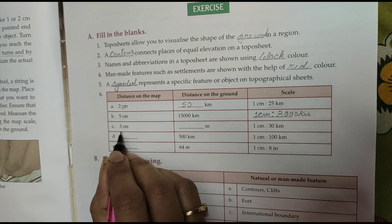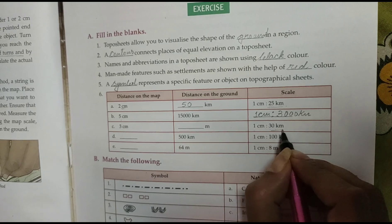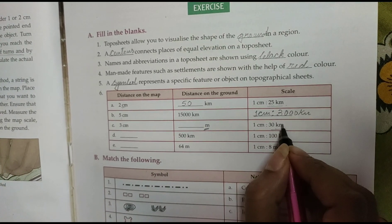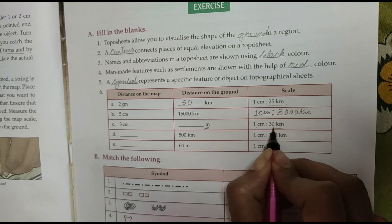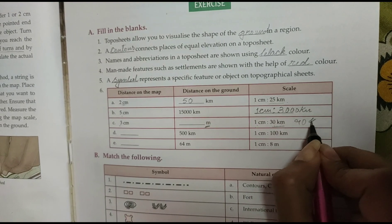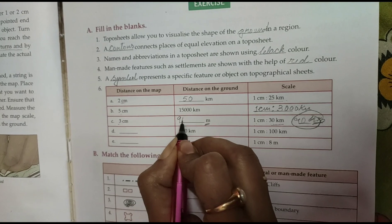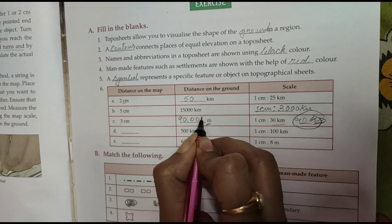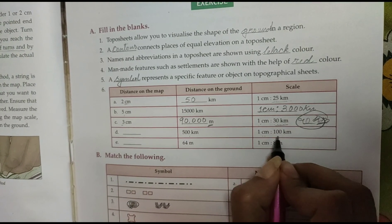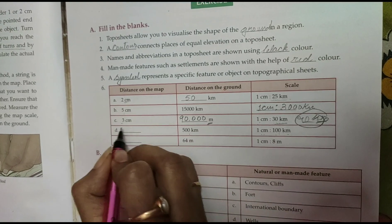Next is 1 cm. Here it is written 1 cm 300 km. So here it is given in meter. We have to convert 1 cm 30 km means 3 cm 90 km. If we convert 90 km into meter it will be 90,000 meter. Here 500 km, 1 cm is to 100 km, so 500 km means 5 cm.